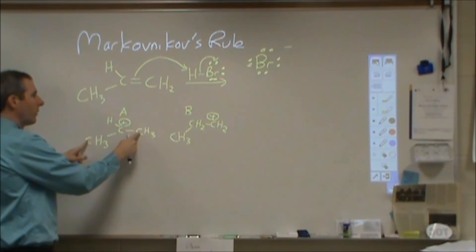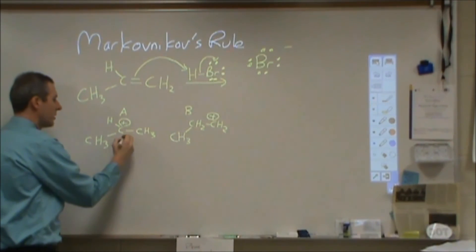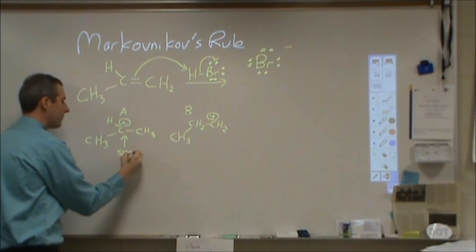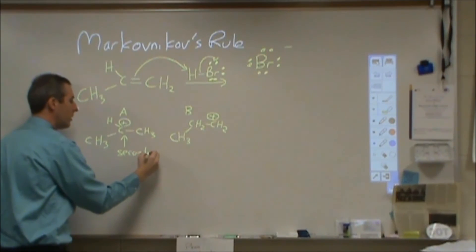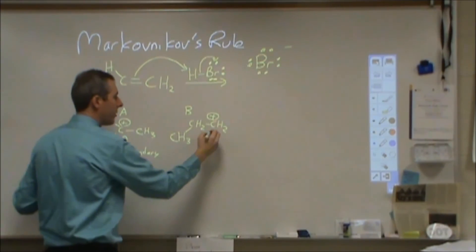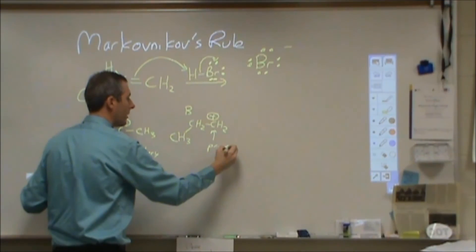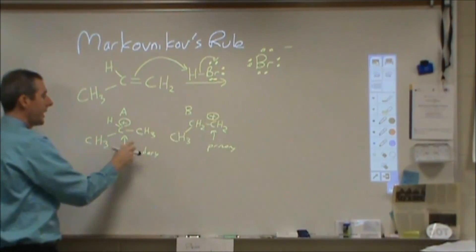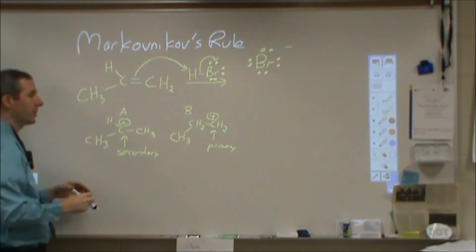This one, on the other hand, is attached to two different carbons. This is a secondary carbon, and this is a primary carbon. A primary carbon has only one other carbon attached; a secondary has two carbons attached. The secondary is our more stable option—this is what we look for.